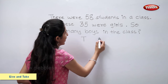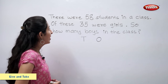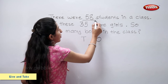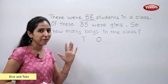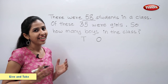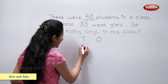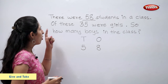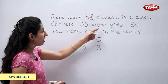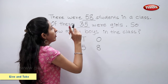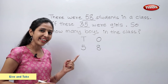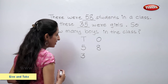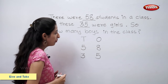Tens, ones. There were 58 students in the class. 58 means five tens and eight ones. So, let's write five tens, eight ones. Of these, 35 were girls. 35 means three tens, five ones. Three tens, five ones.